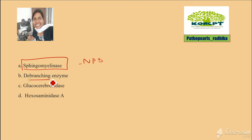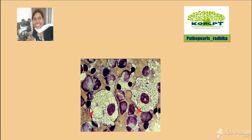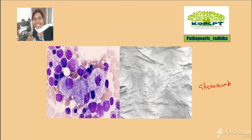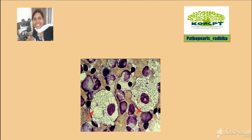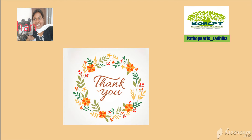Sphingomyelinase deficiency leads to Niemann-Pick's disease. Debranching enzyme deficiency leads to Cori's disease. Hexosaminidase A deficiency leads to Tay-Sachs disease. In Gaucher's, the cell shows a crumpled tissue paper appearance. In Niemann-Pick's disease, the macrophage shows multiple small vacuoles — vacuolated or foamy cytoplasm.